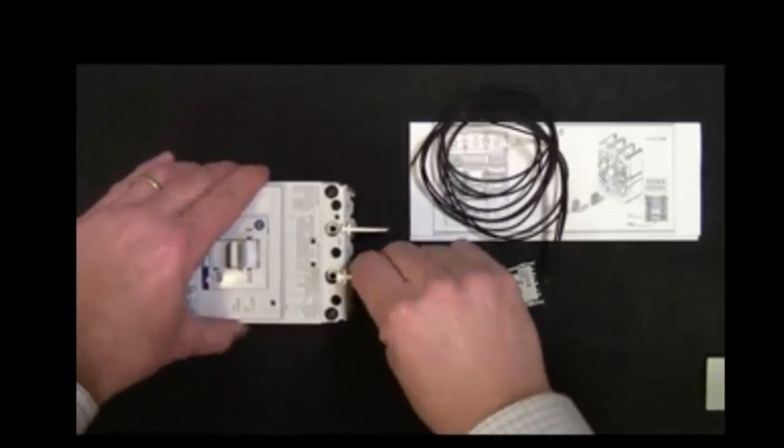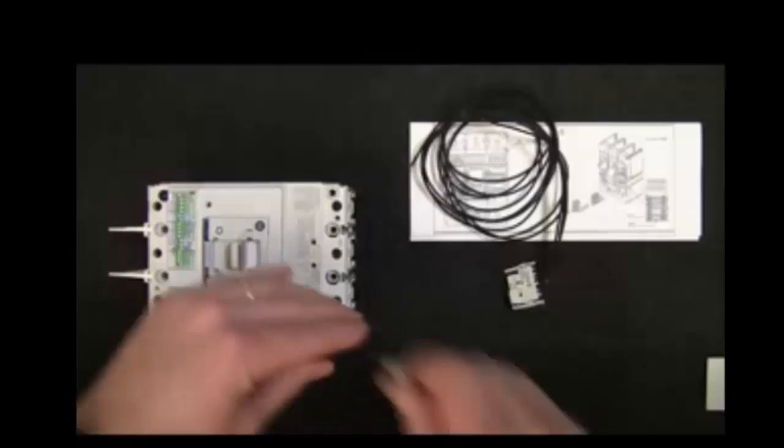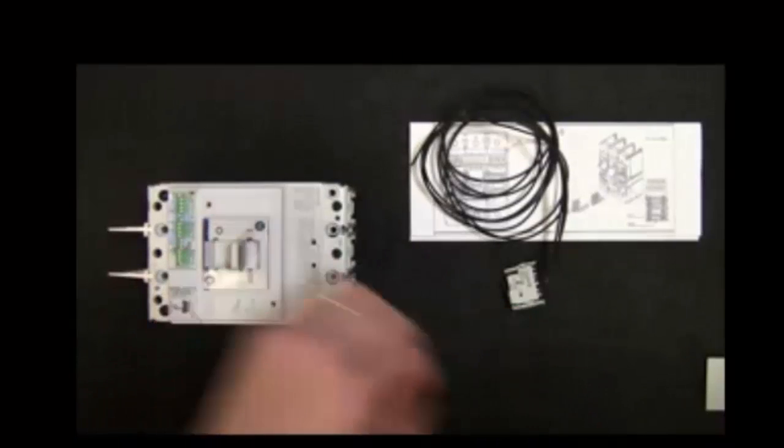First remove the phase barriers from the top of the unit, then remove the machine screws holding the faceplate on the breaker, also found at the top of the unit.